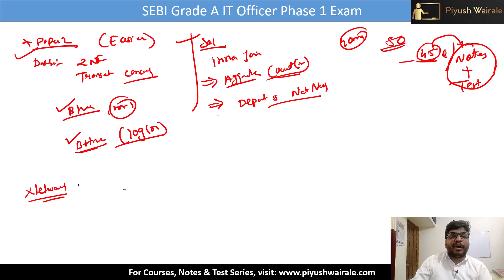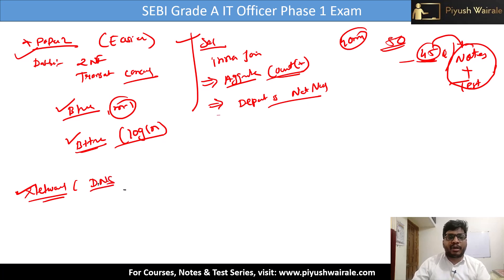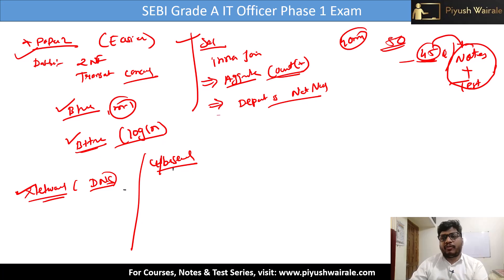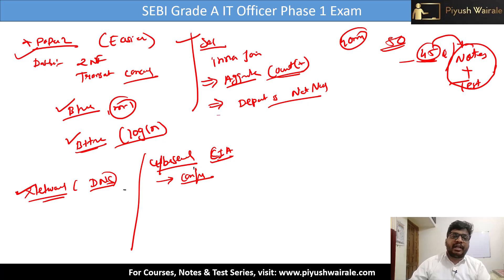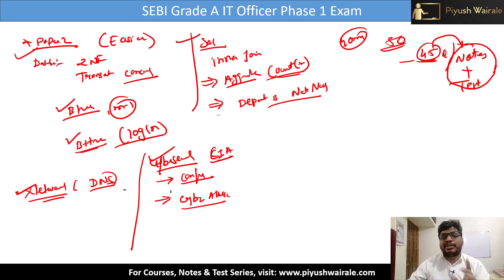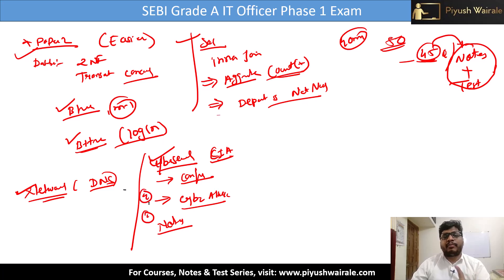For networking, all five questions can be solved from the notes — for example, DNS belonging to the application layer protocol. In cyber security, one question was directly from the test series — about unauthorized access relating to confidentiality based on the CIA triad. We also covered many questions based on cyber attacks. Out of five cyber security questions, four can be easily solved from the notes.